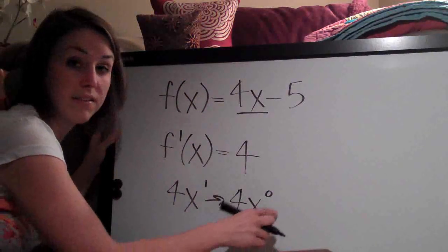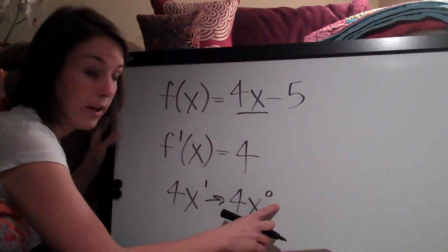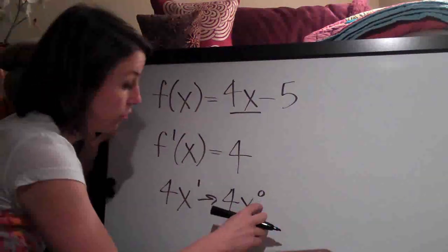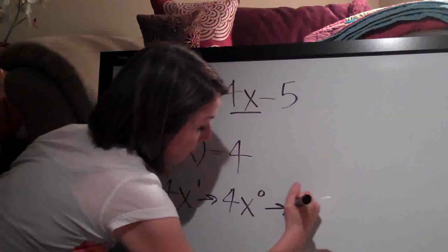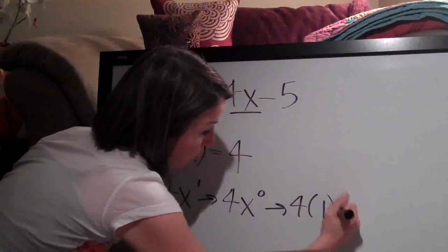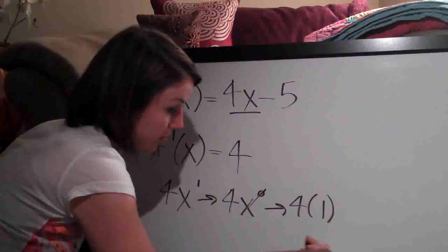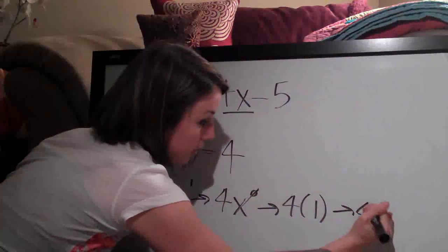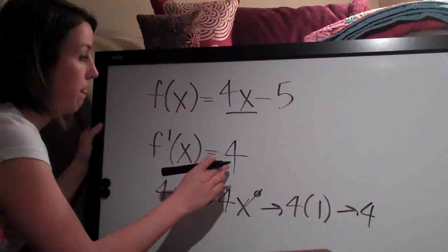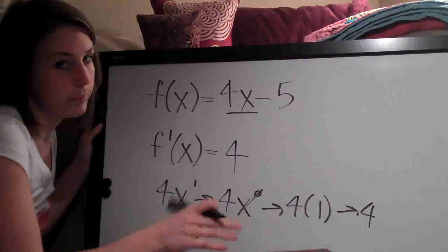Of course, x to the 0 is 1. Anything raised to the 0 is 1. So this would become 4 times 1. And of course, 4 times 1 is just 4. So that's why the derivative of 4x is 4.